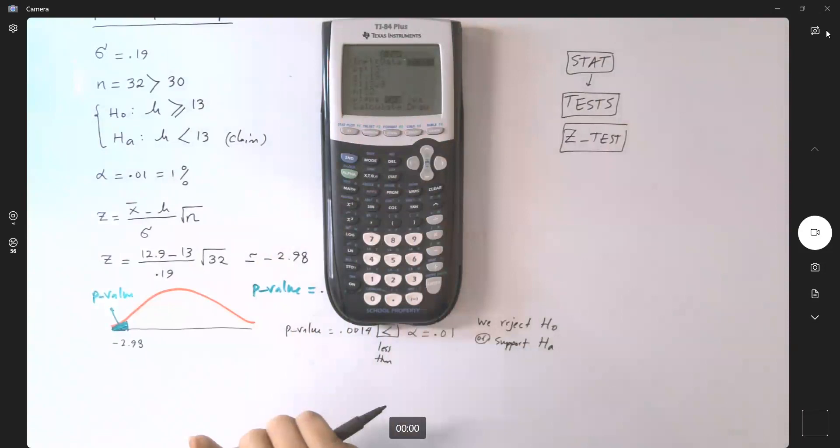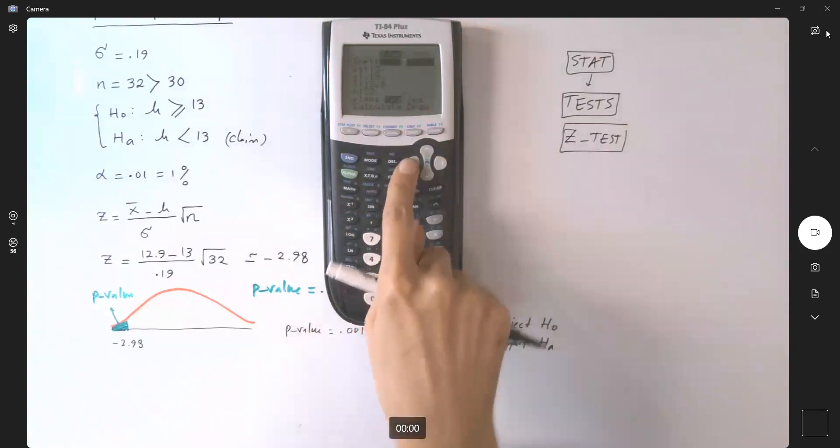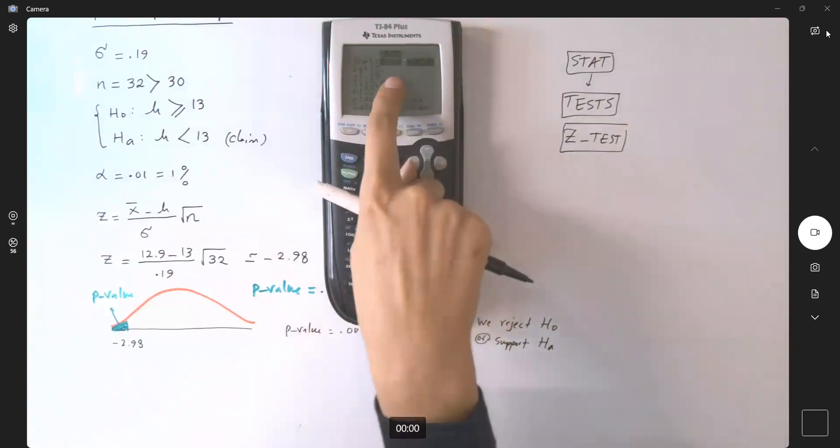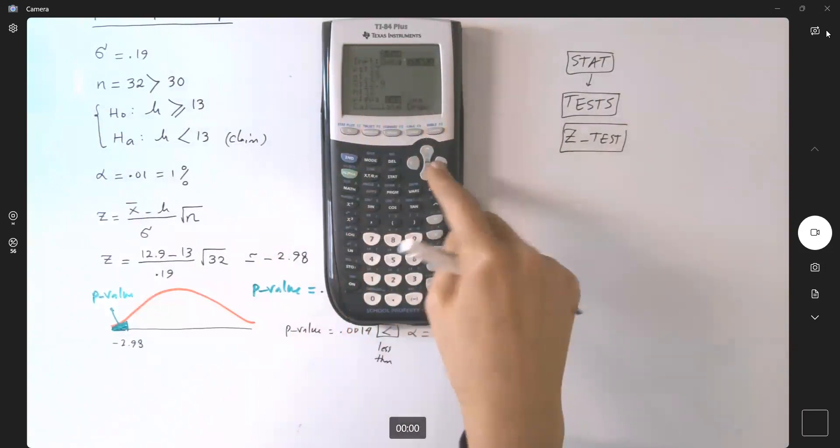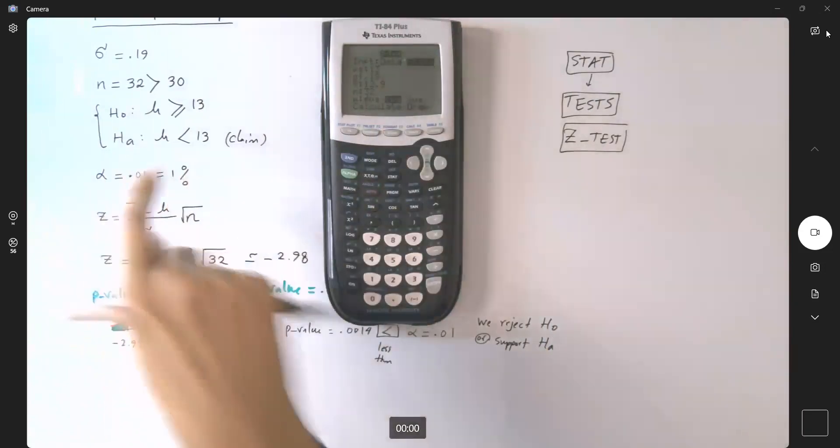Then you're going to find z-test. After finding z-test, you enter some information. You don't have the actual data. If you have the actual data, you're going to enter them in your L1, L2, L3 and so on. But here we have stats, summary statistics.